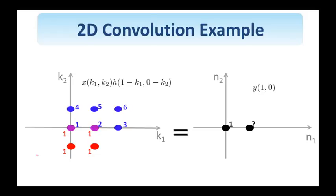The next shift is by 1 in the horizontal and 0 in the vertical direction, so this is the picture that you see here on the left. The overlap now is at these two pixel locations. The shift is 1, 0, so I'm going to find the output at 1, 0. I carry out the multiplication and the summation, and I see that the value of y(1, 0) is equal to 3.